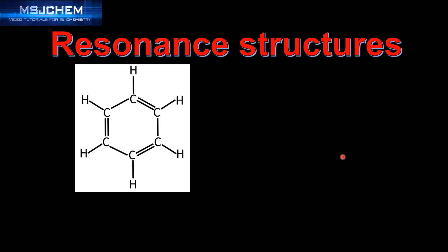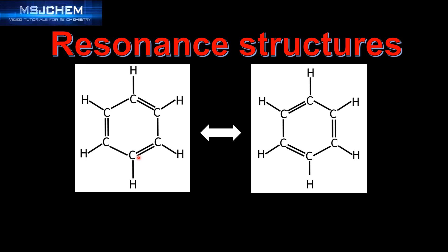Next we look at the Lewis structure for benzene. Benzene has the molecular formula C6H6. There are two resonance structures for the benzene molecule and each resonance structure has alternating carbon to carbon single and carbon to carbon double bonds. The carbon to carbon single bonds are composed of one sigma bond, and the carbon to carbon double bonds are composed of one sigma and one pi bond.